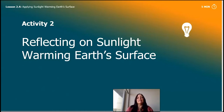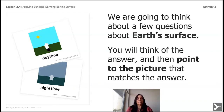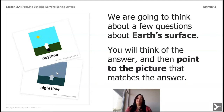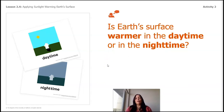Now we're going to reflect on sunlight warming Earth's surface. We'll think about a few questions and point to the picture that matches the answer. If I say daytime, you point to the daytime picture. If I say sunlight is shining on Earth's surface, it will be this picture. Is Earth's surface warmer in the daytime or in the nighttime? Yes — the Earth's surface is warmer in the daytime, just like in the playground.